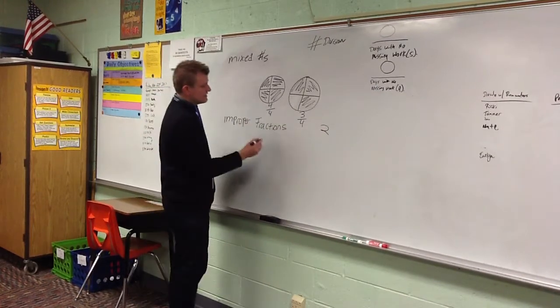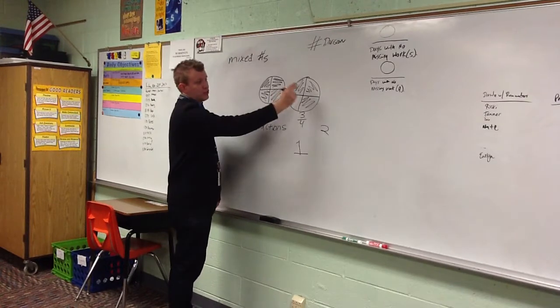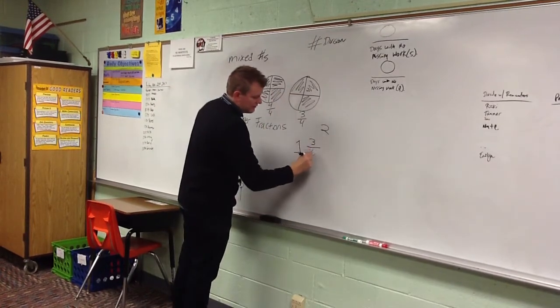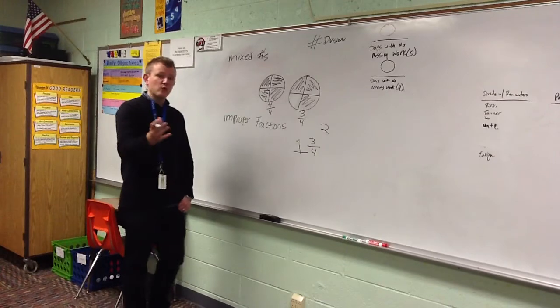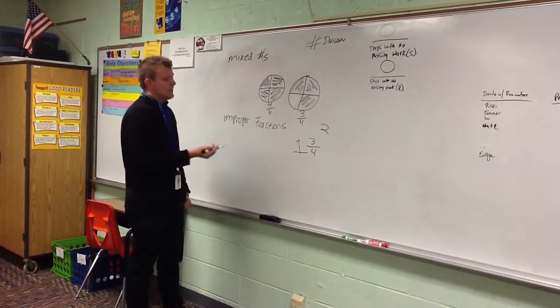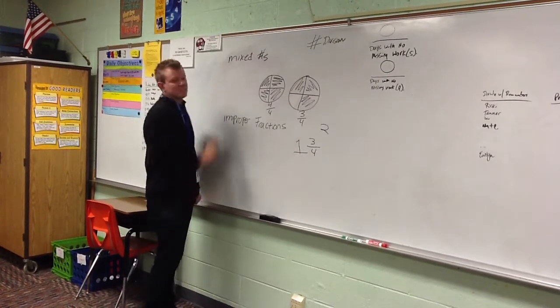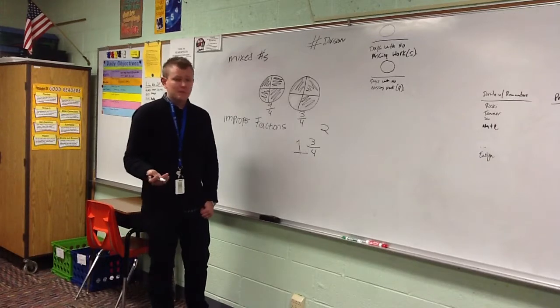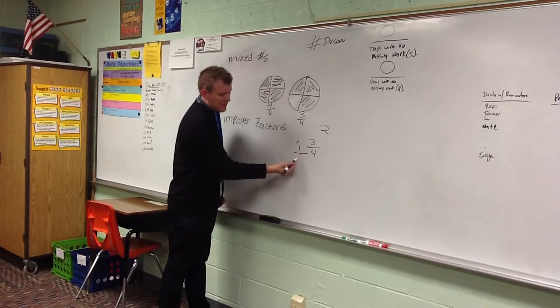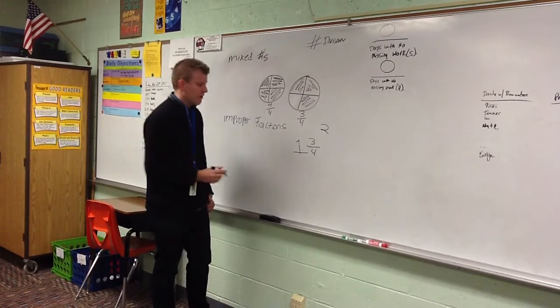So when I look at this, I can see that I have one whole pizza and three fourths of my second pizza. So if you asked me, Mr. Quick, you just ate that one piece of pizza, how much pizza do you have left now? I would say I have one and three fourths pizzas left. And that is a mixed number. It's called a mixed number because it mixes up, it combines a whole number, in this case one, and a fraction, in this case three fourths.